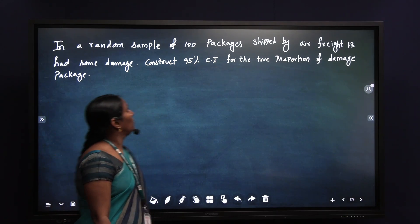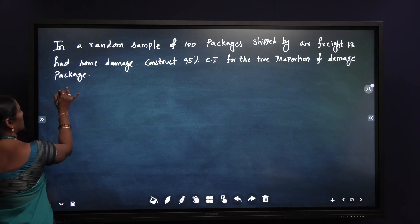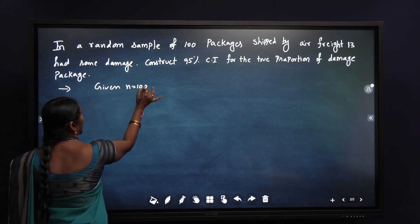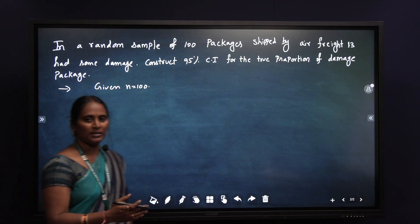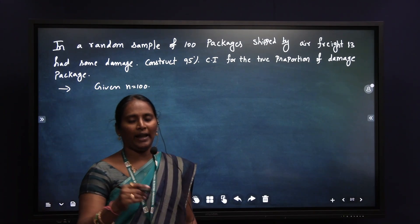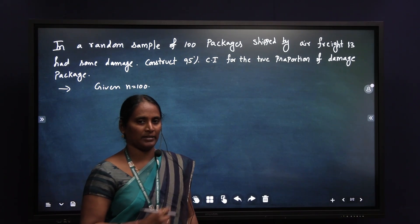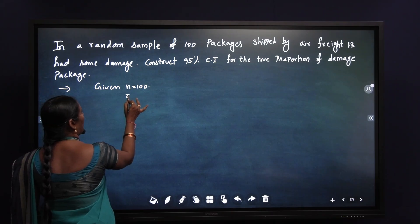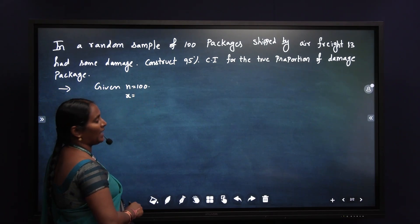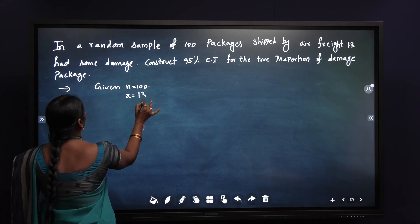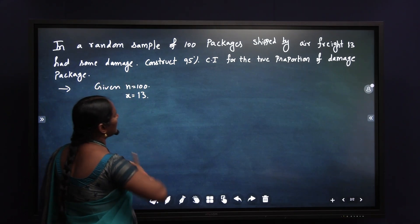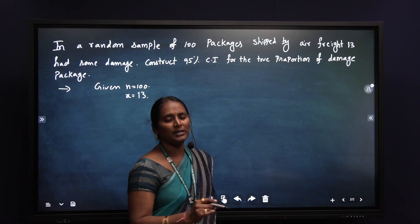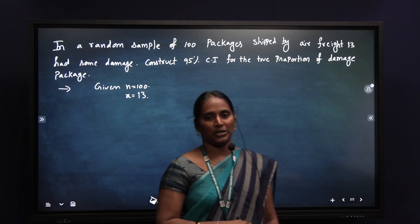Construct the 95% confidence interval for the true proportion of damaged packages. In the given problem, we can identify the given sample size — the value of n is equal to 100. An item is to be defective; we are going to define the event as x. The damage already happened, so x is equal to 13. They are asking to find out the proportion limits.